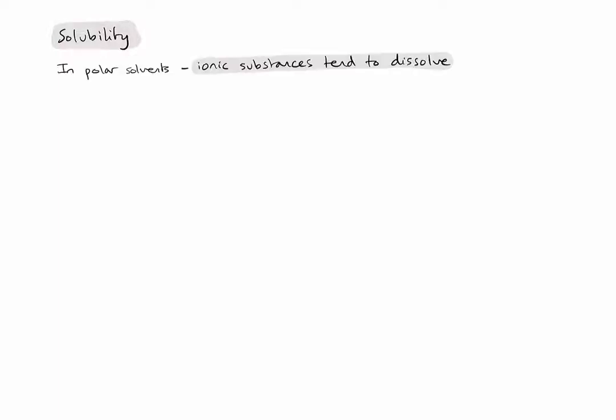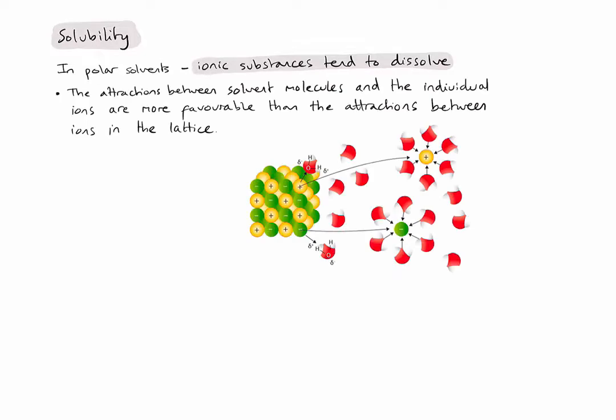Next let's look at solubility. As a general rule, in polar solvents like water, ionic substances tend to dissolve. This is because the attractions between the polar solvent molecules, like water molecules, and the individual ions in the ionic substance are more favorable than the attractions between ions in the lattice. Let's have a look at what that means in a diagram.